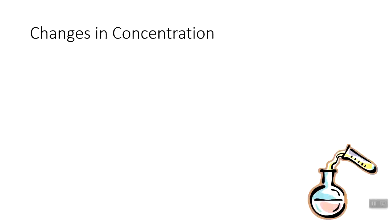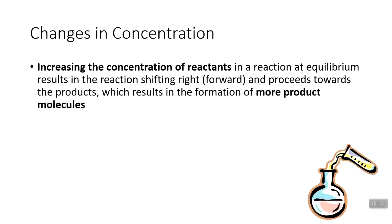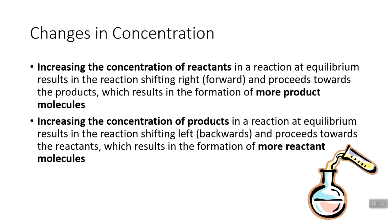Increasing the concentration of reactants in a reaction at equilibrium results in the reaction shifting right — moving forward toward products, forming more product molecules. Think of it as the reactant side being more stressed, so the reaction pushes toward the opposite side. Increasing the concentration of products results in the reaction shifting left — going backward toward reactants, forming more reactant molecules.